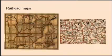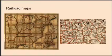Railroad maps show you the growth of travel and settlement as well as the development of industry and agriculture in the United States. Towns grew up around railroad lines. The Library of Congress has an excellent collection of railroad maps from 1828 through 1900.